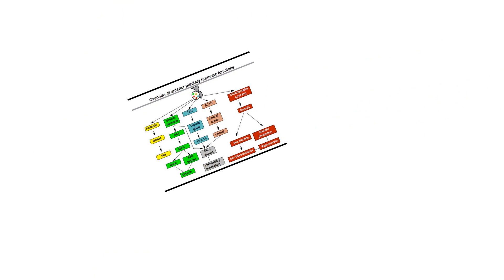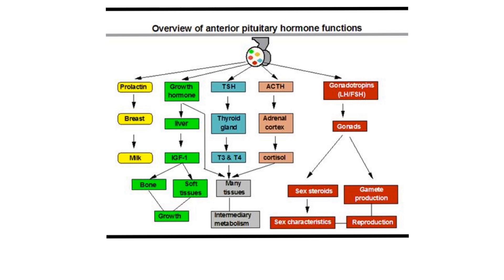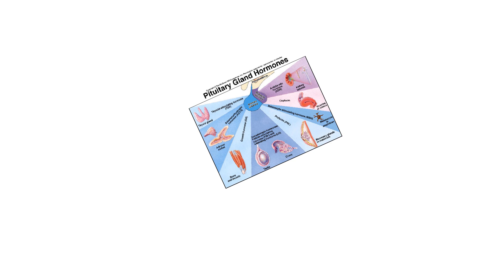Now we have another graphic that shows the anterior pituitary hormones and where they go. There's prolactin and growth hormone — some growth hormone goes to the liver, some goes directly to tissue — thyroid-stimulating hormone, adrenal corticotropin, and then the gonadotropins: LH, luteinizing hormone, and FSH. You've got the pause button to review those.